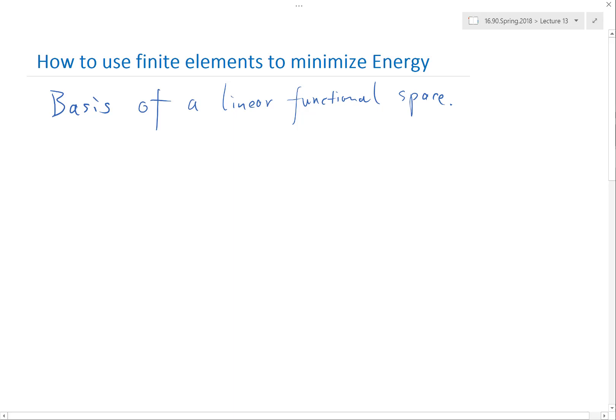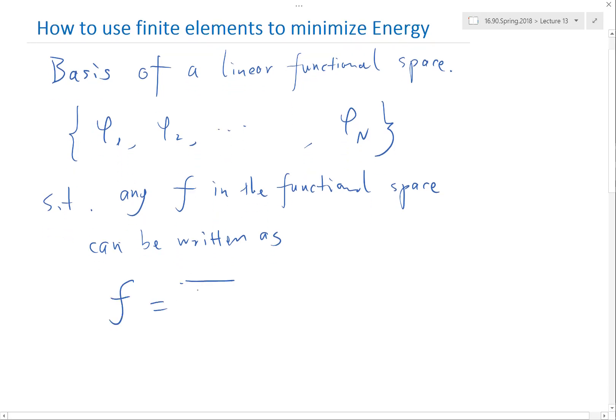What does it mean in this case? It just means a collection of functions phi 1, phi 2, etc. to phi N, just a finite number of functions, such that for any function, any F in the functional space—functional space is just a fancy name for space of functions, just a set of functions—any F in the functional space can be written as a linear combination of these phis. F is equal to summation of I goes from 1 to N, a_I times phi_I.